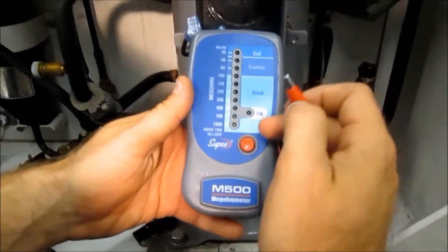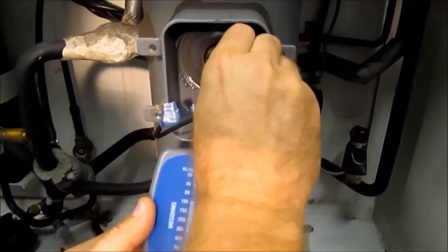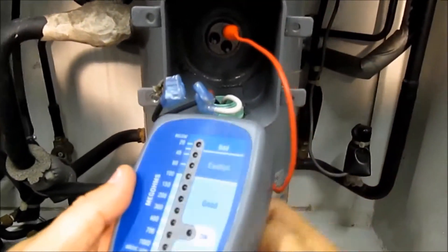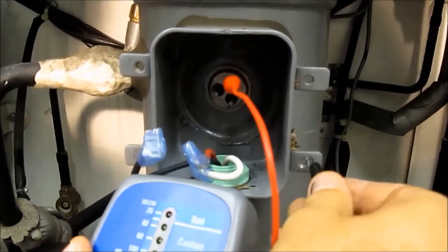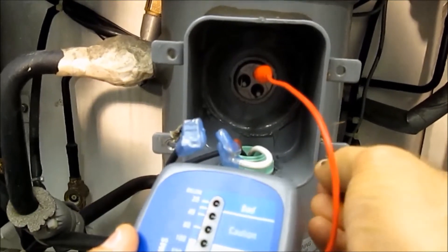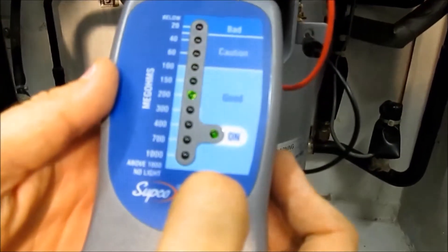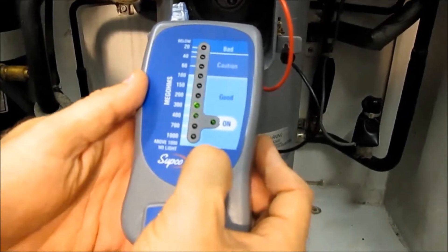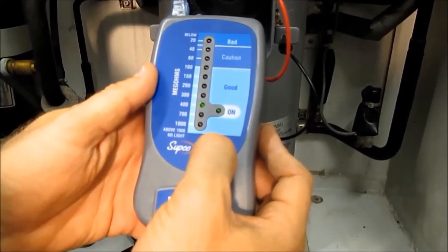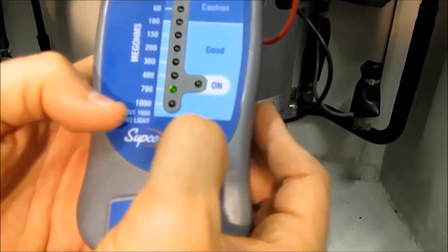Now we're going to check the compressor with a megger. So we go one lead here, and then we put the ground on a ground spot. Then we hold the button, and we've got to hold it there. This one is checking out good. You've got to hold it for a little bit.